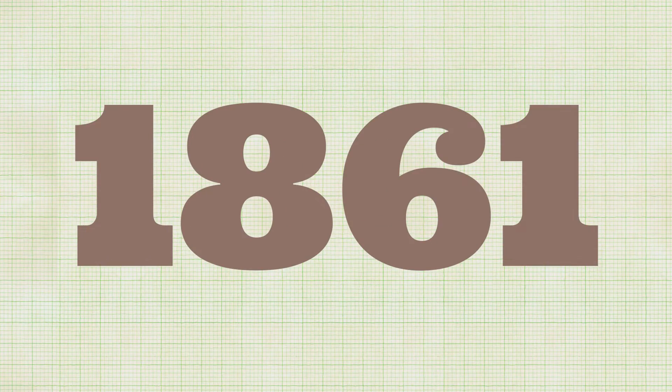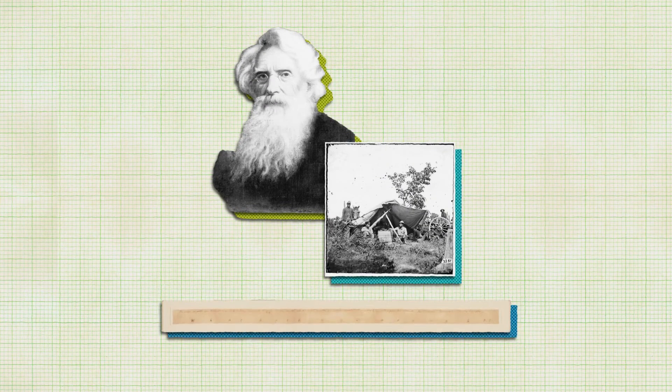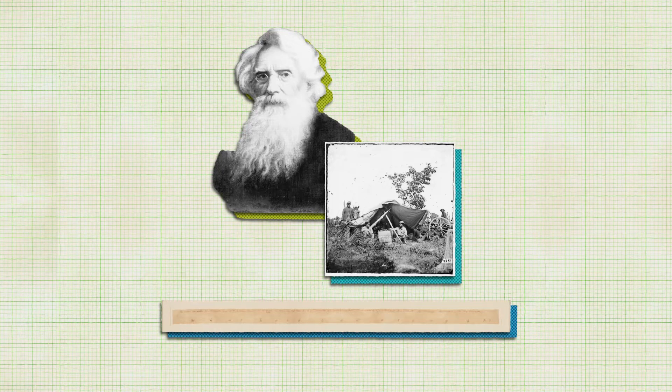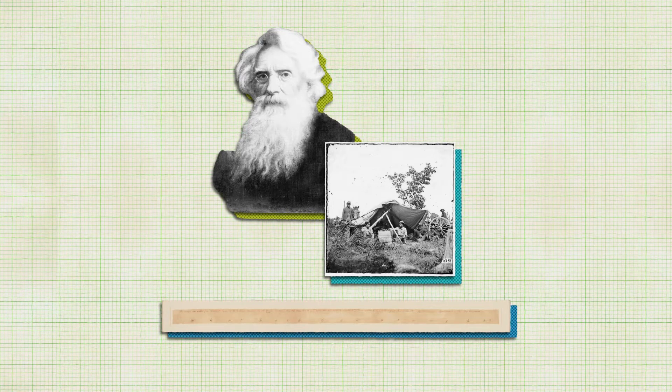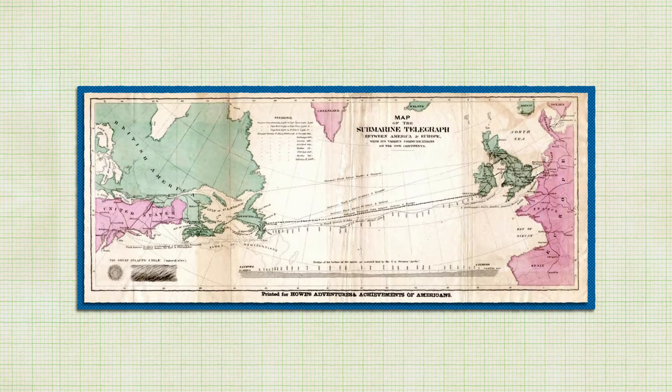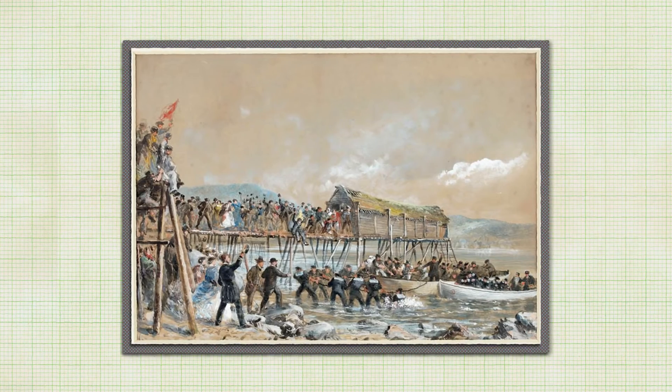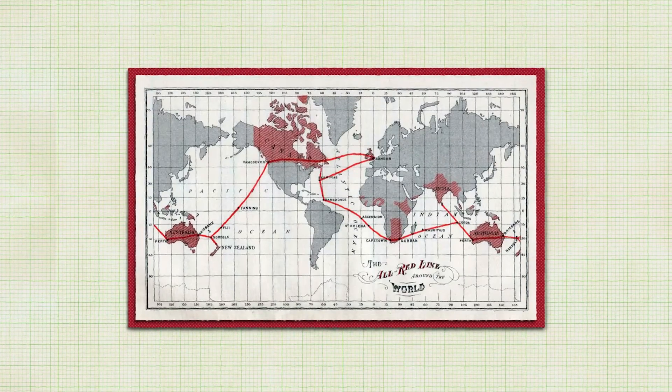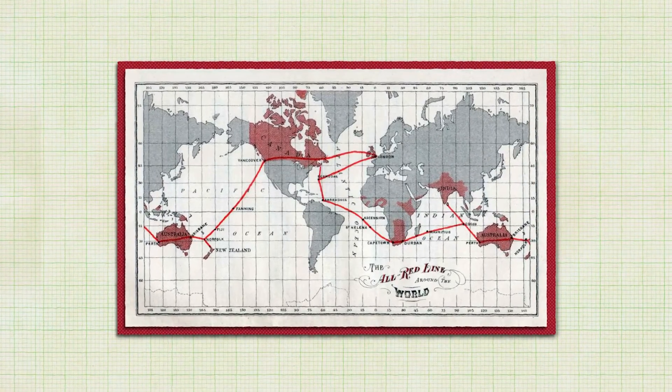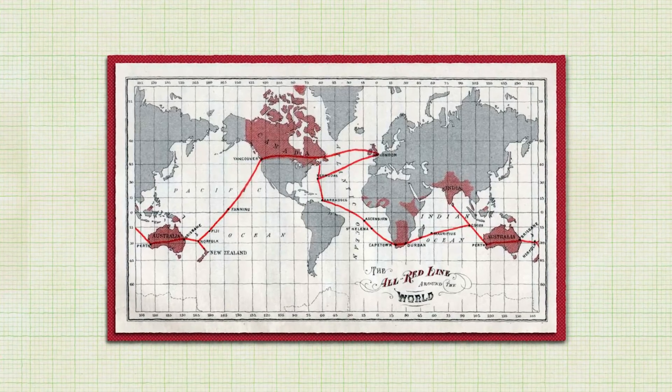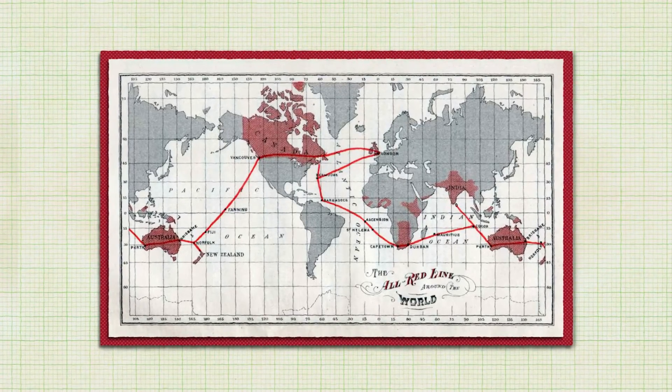Things really began to speed up when the electric telegraph was invented in the mid-1800s. By 1861, it became possible to send a telegraph from the east coast to the west coast. Now, news could be transmitted almost instantaneously. Britain soon became a global telecommunications hub, with the British government running cables to the Bahamas, to Barbados, to South Africa, to India, to Australia, to New Zealand, to Canada, and back to Britain.